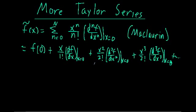Welcome back. In the last couple of videos, we have been working with Taylor series expansion for a general function f of x. We found that with a Taylor series expansion, we can approximate an unusual function or any general function in terms of a polynomial. What we're doing in these videos is applying this Taylor series expansion for special functions, like e raised to the x power or trigonometric functions, but expanding about the point x equals zero. When you expand a Taylor series about this point, we give it a special name — it's called the Maclaurin series.